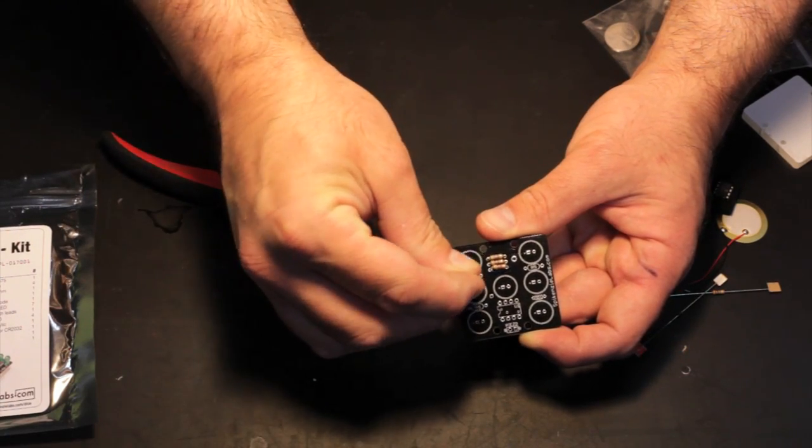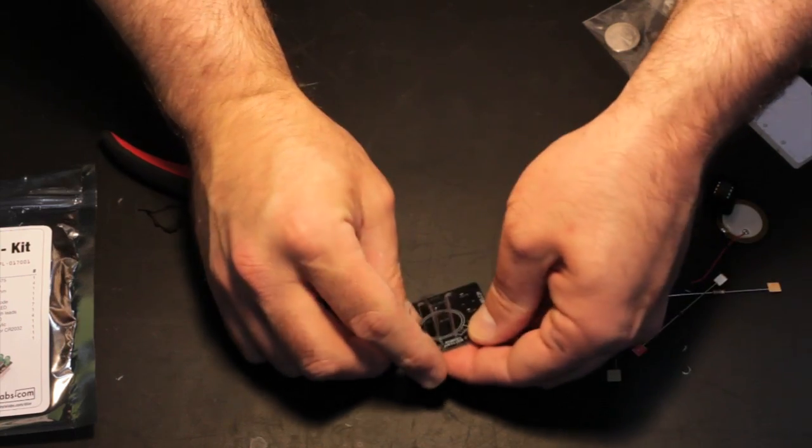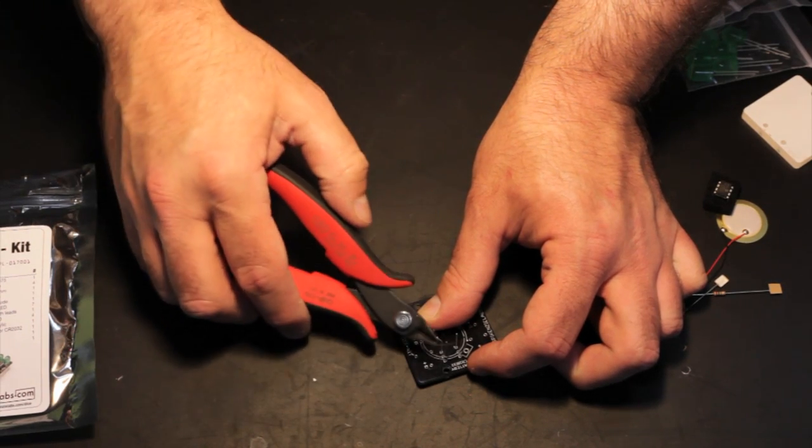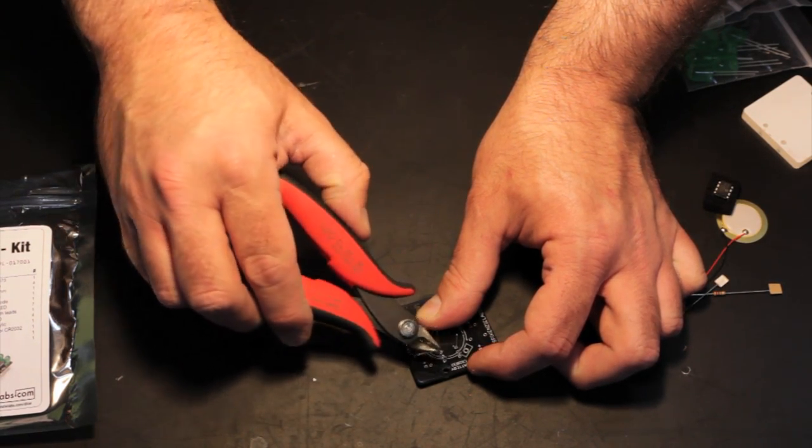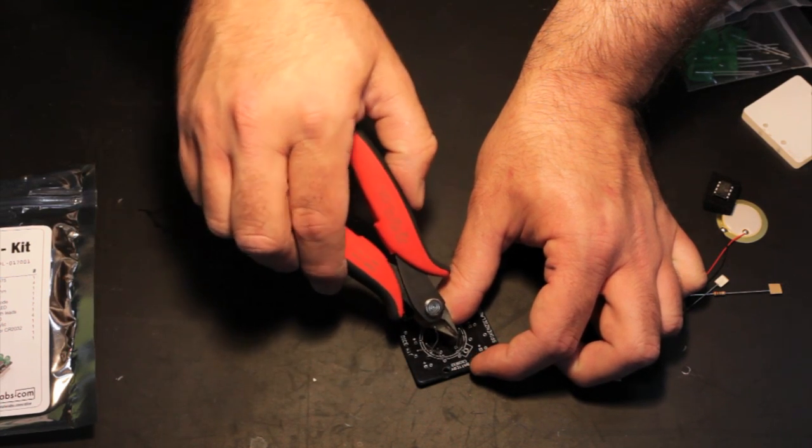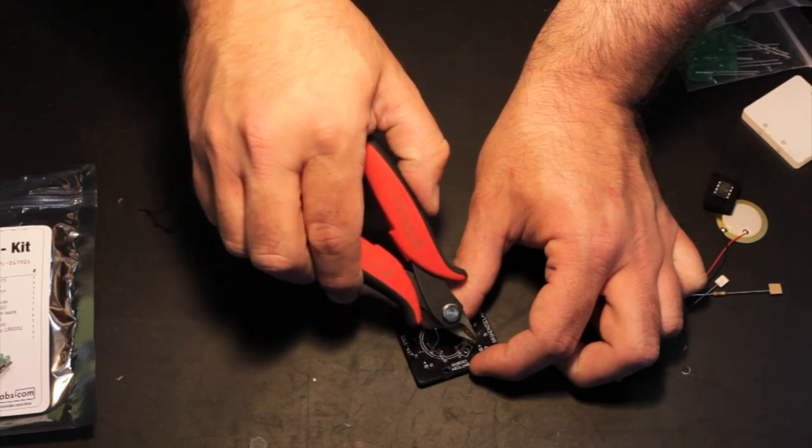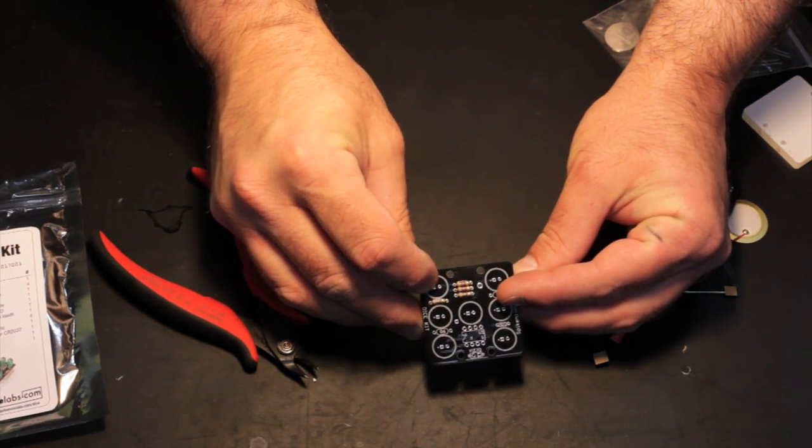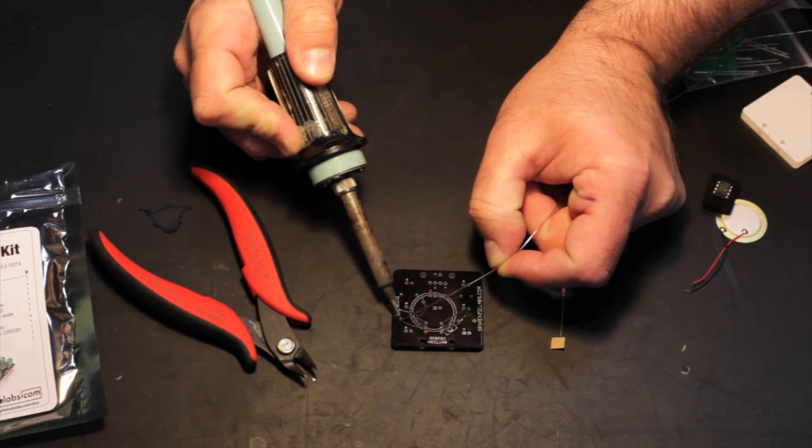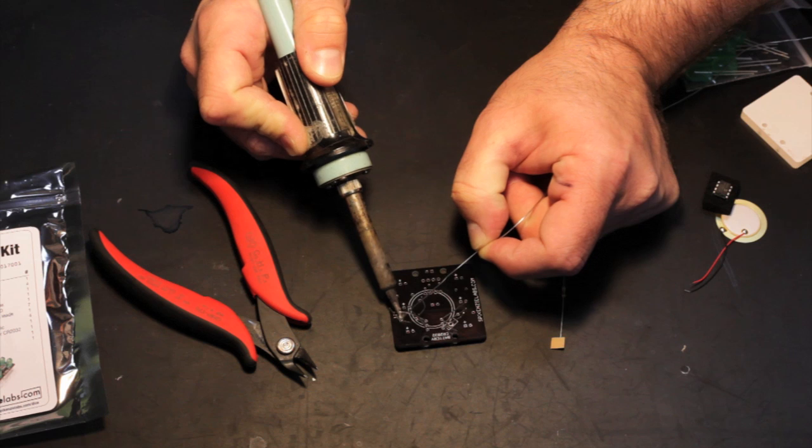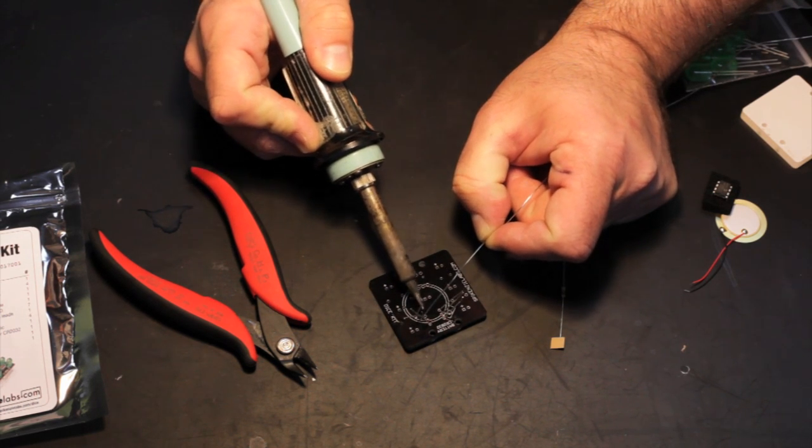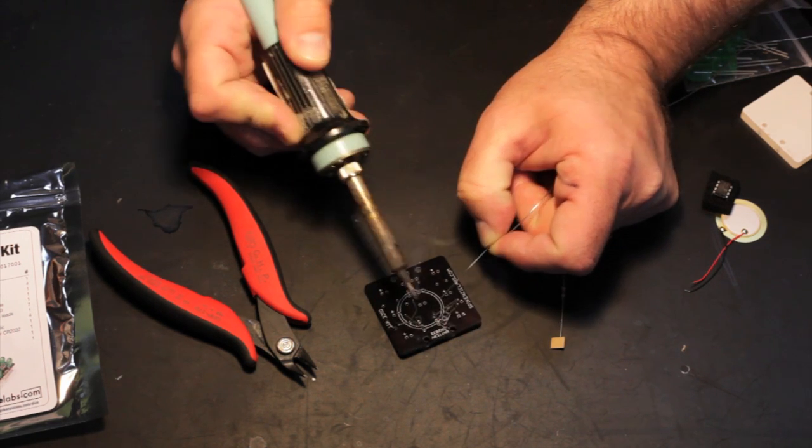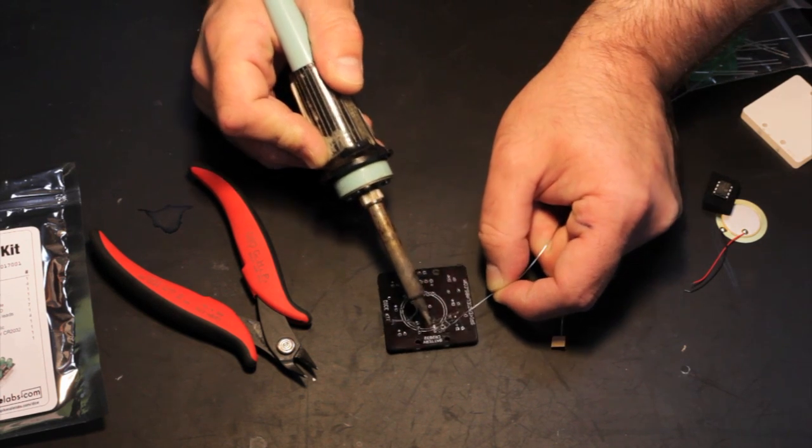Now that they're all in, turn the board over. You can give a little pull on each of the legs very gently just to hold them in place while we're going to be soldering. Just touch the tip of the soldering iron right to the leg and then start applying some solder. You'll see the solder fall right into the hole. Do this for each of the resistors.